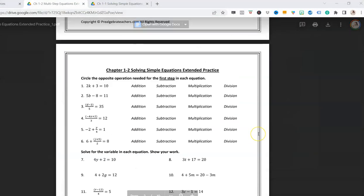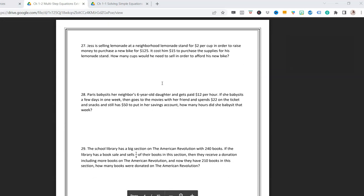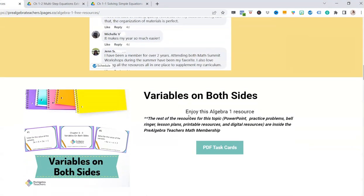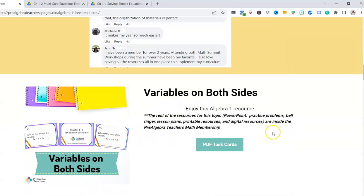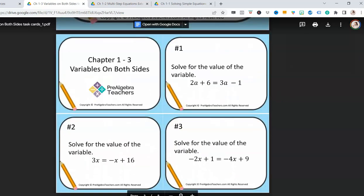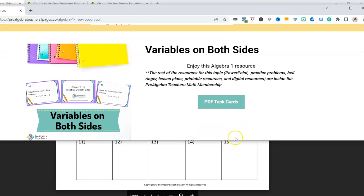Here are our practice problems for Two-Step Equations. You get all of them and then the answer keys of course. Next, we have Variables on Both Sides. For this topic, you get our set of task cards, so it includes all 15 task cards and answer key and a work template or a space for your students to be able to show their work.